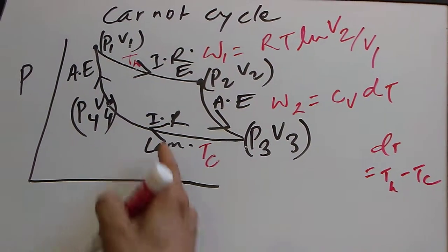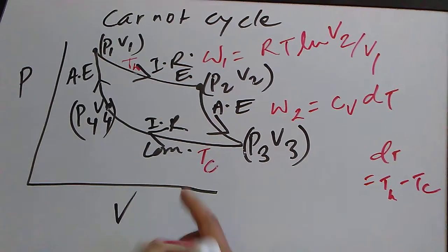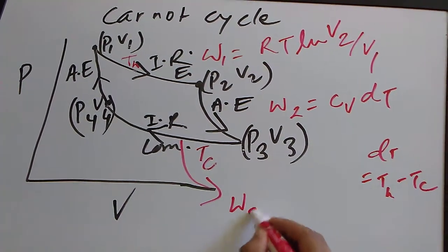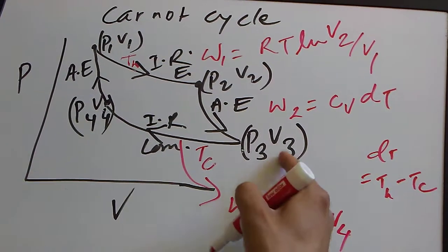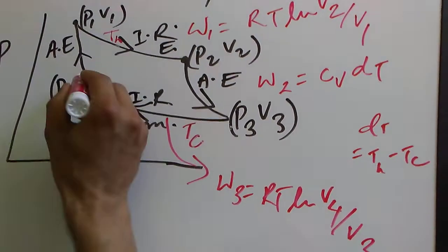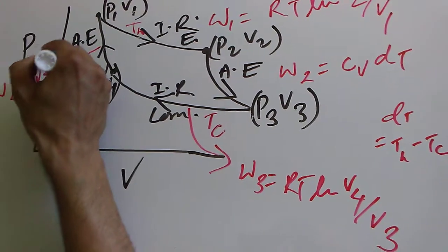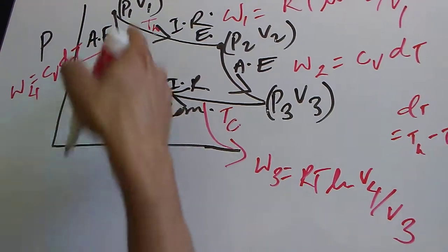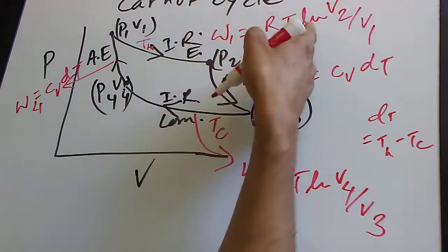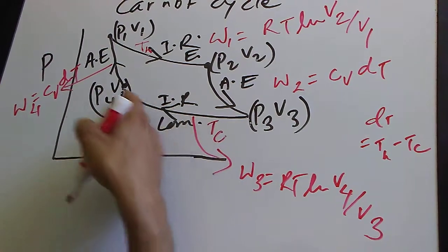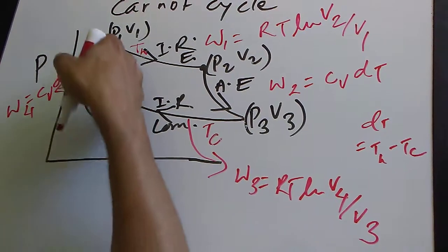The work done along the low-temperature isothermal reversible compression curve — we consume electricity here — is W3, which equals R·TC·ln(V4/V3). The work done in the adiabatic compression is W4 = Cv·DT, again with DT = TH − TC. Since the isothermal and adiabatic processes involve expansion (positive) and compression (negative) respectively, W4 is negative.